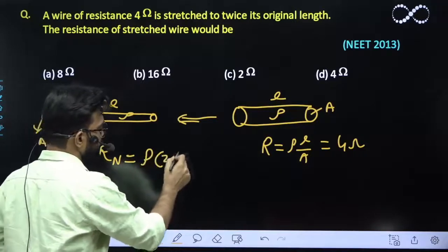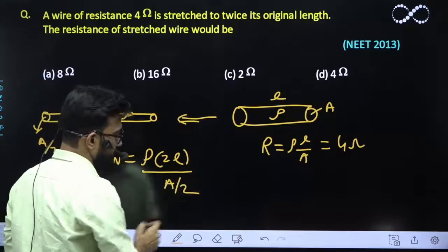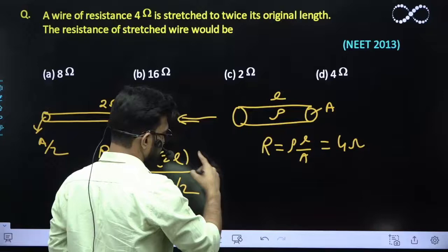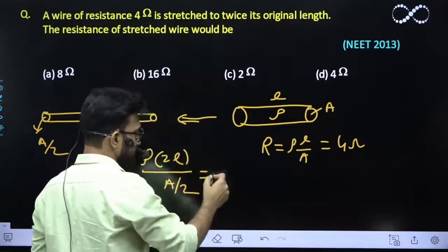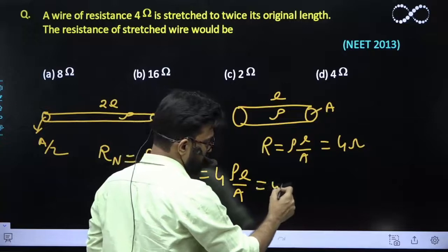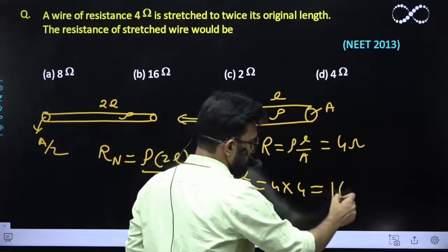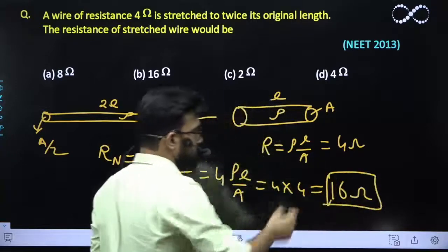R_new = ρ(2L)/(A/2). The 2 in the denominator goes to the numerator, so it becomes 4ρL/A, which is 4 times the previous value of 4 ohms. Therefore, the final answer is 16 ohm.